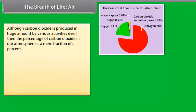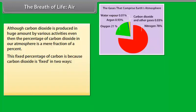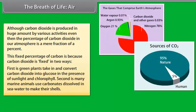Although carbon dioxide is produced in huge amounts by various activities, even then the percentage of carbon dioxide in our atmosphere is a mere fraction of a percent. This fixed percentage of carbon is because carbon dioxide is fixed in two ways. First, green plants take in and convert carbon dioxide into glucose in the presence of sunlight and chlorophyll.